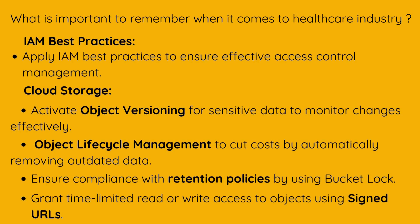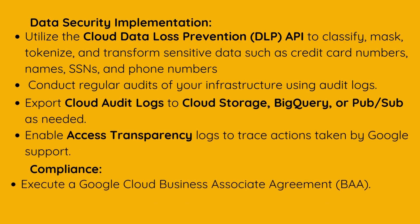Key things to remember for the healthcare industry: apply IAM best practices to ensure effective access control management; activate object versioning for sensitive data to monitor changes effectively; use object lifecycle management to cut costs by automatically removing outdated data; ensure compliance with retention policies using bucket lock; grant time-limited read or write access using signed URLs; utilise the Cloud Data Loss Prevention DLP API to classify, mask, tokenise and transform sensitive data such as credit card numbers, names, SSNs and phone numbers; export cloud audit logs to Cloud Storage, BigQuery or Pub/Sub as needed; enable access transparency logs to trace actions taken by Google support; and execute a Google Cloud Business Associate Agreement, BAA.